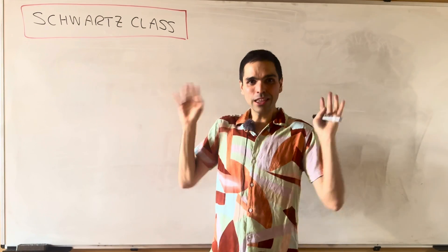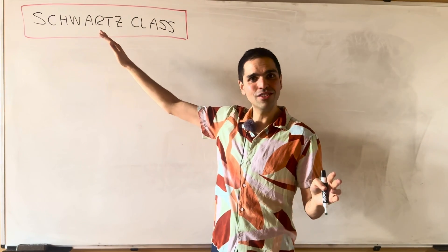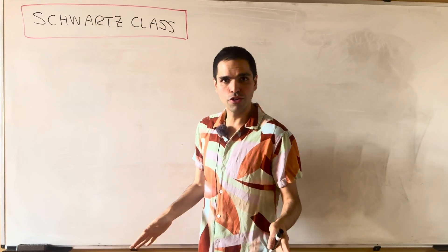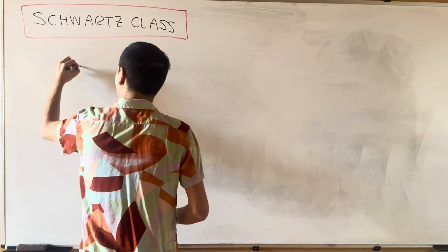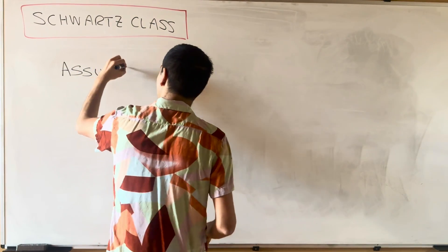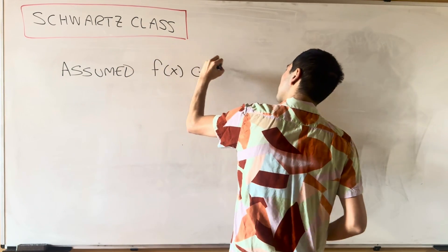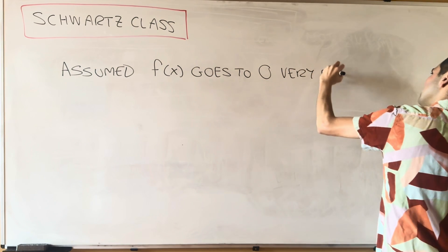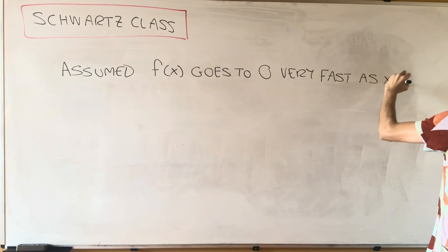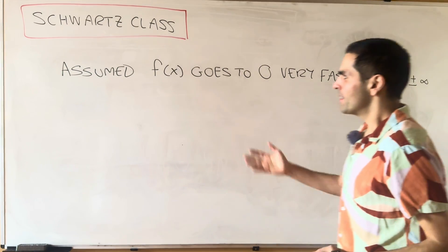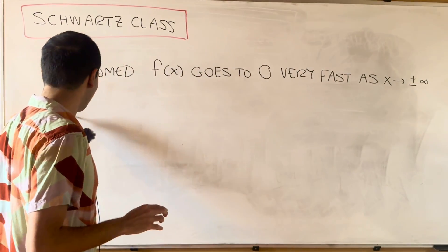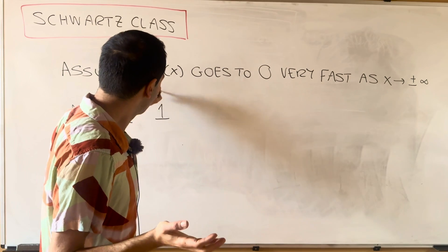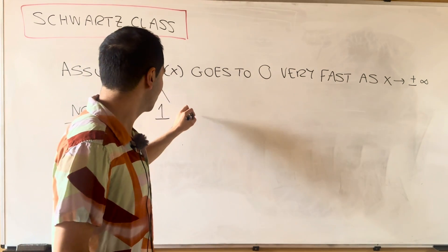But beside the point, the point here is to have a useful class of functions for the Fourier transform, because if you notice our derivation of the Fourier transform, we assume that f goes to zero very fast as x goes to plus or minus infinity. And in fact, if you try to calculate the Fourier transform of the function one, then you will see that that integral doesn't exist.